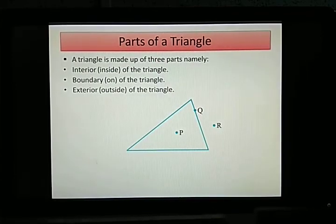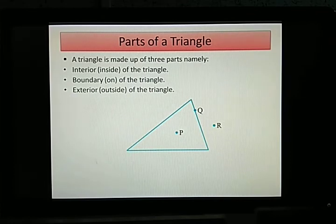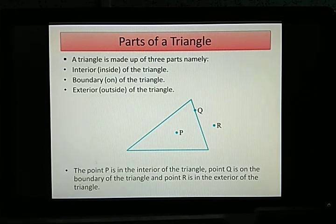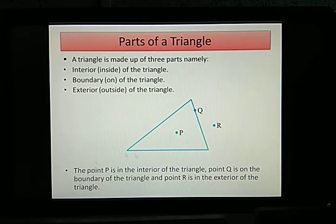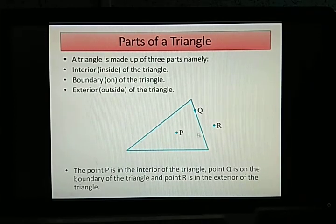So this will be clear with the help of a diagram, as well as with the help of some points. So as you can see there are three points P, Q, and R. So let us see which lies in which region. The point P is in the interior of the triangle. Obviously it is very much clear. Inside these three or inside the boundary it is. So obviously it is interior. Then point Q lies on the boundary itself. And point R is totally in the exterior. Outside of the triangle. So these are the three parts of a triangle.